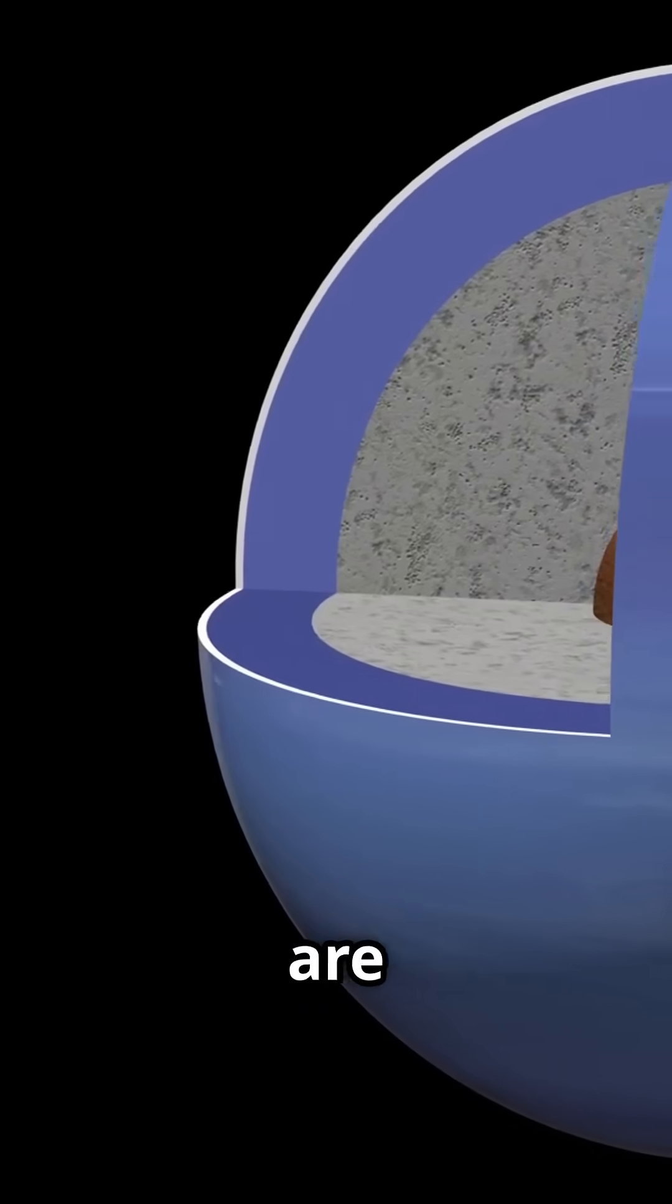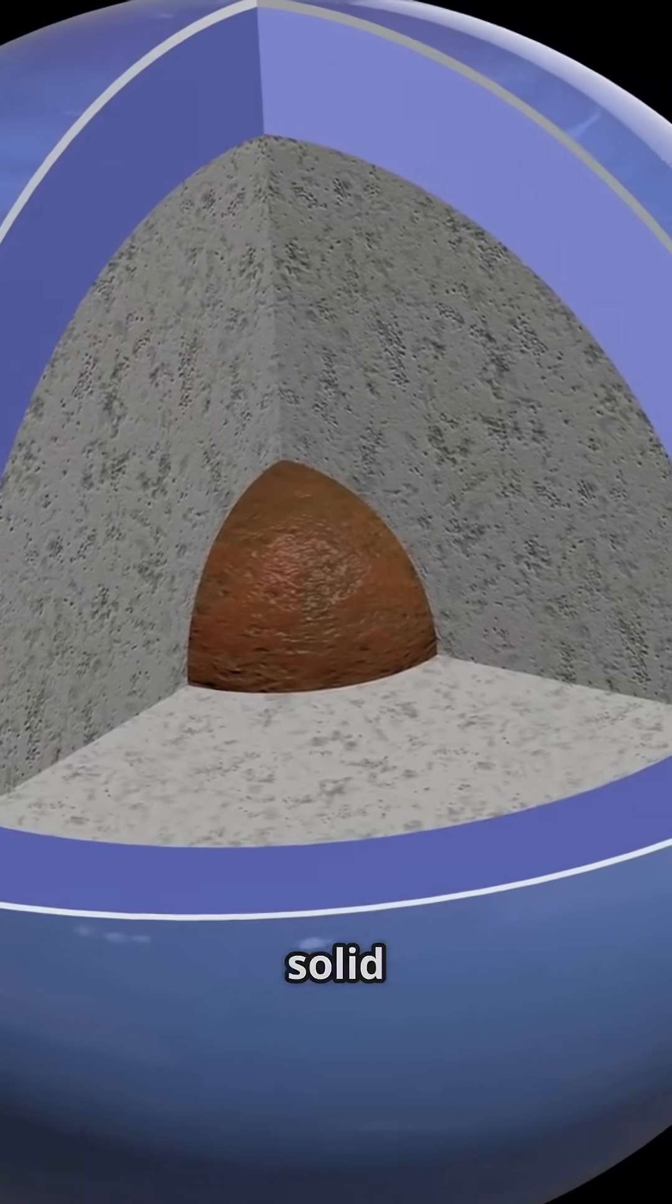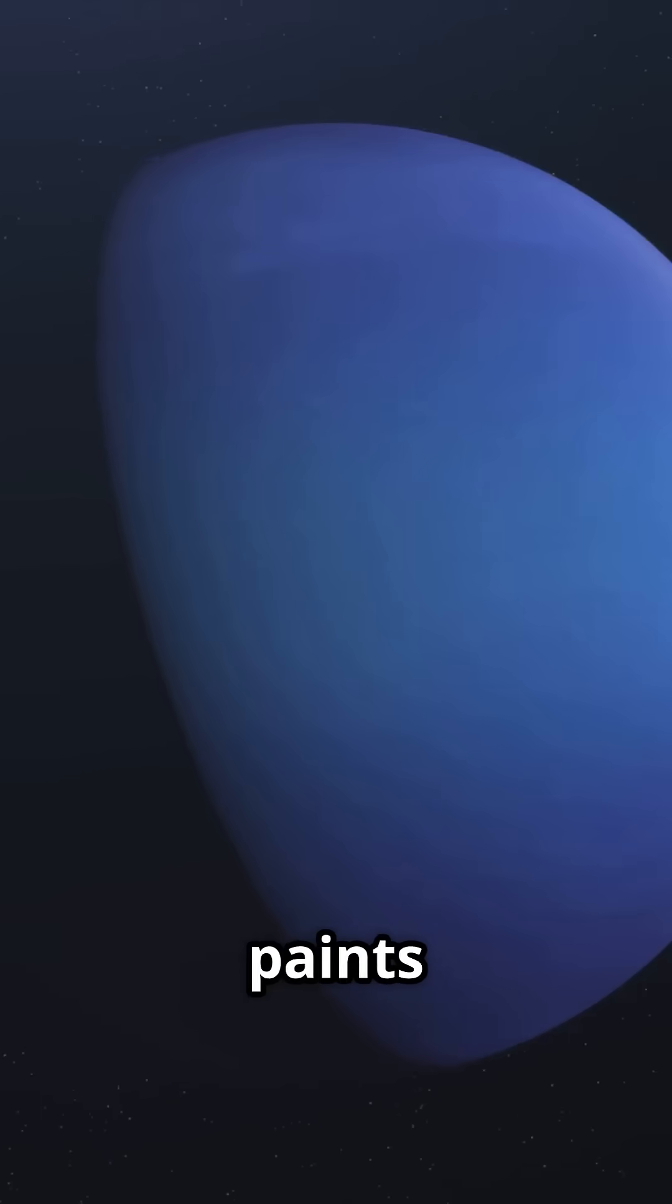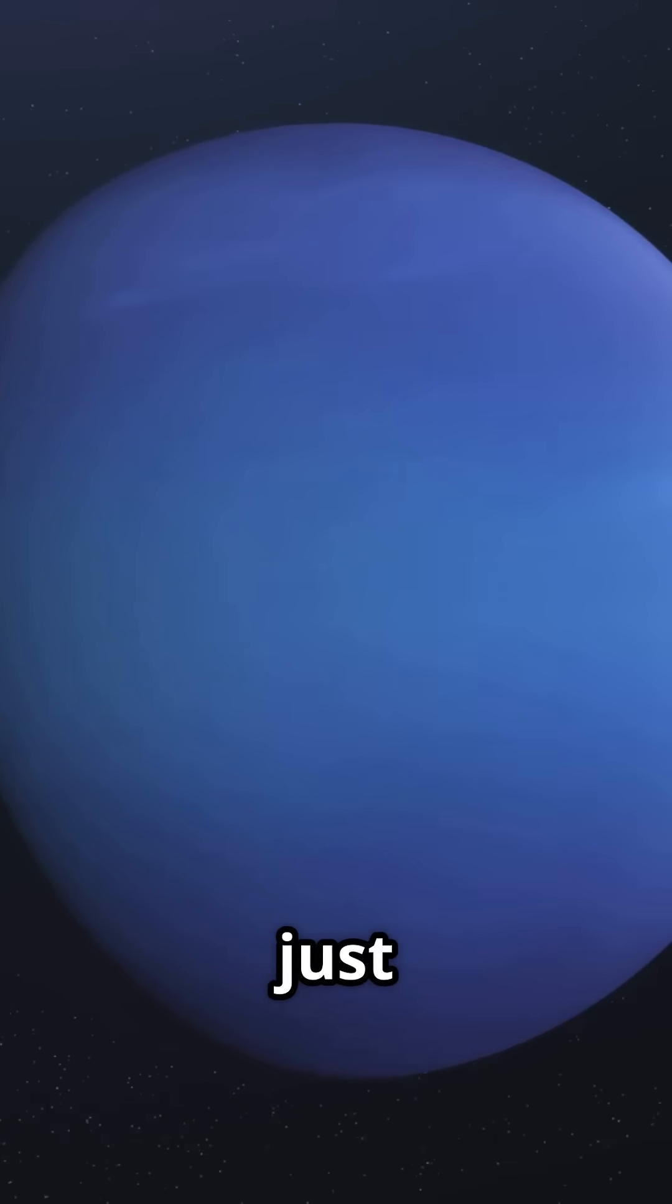Their rocky cores are wrapped in wild layers of super-pressurized fluids, no solid ground here. Methane paints their clouds those iconic blue shades, and that's just the start.